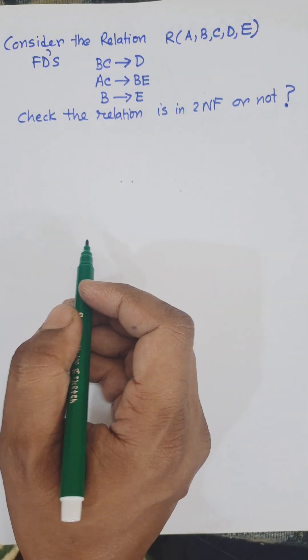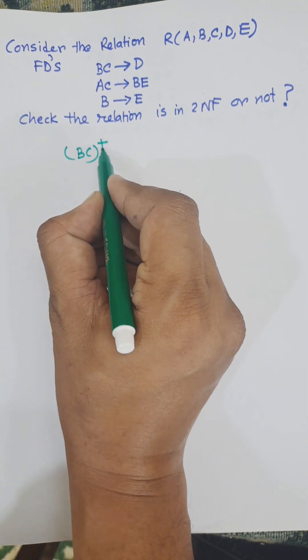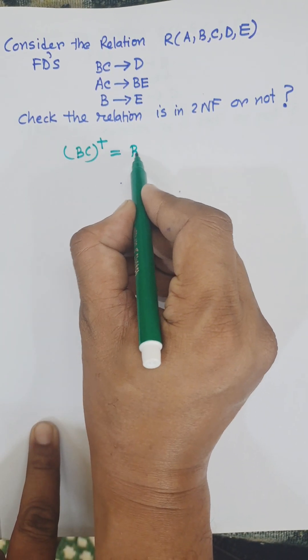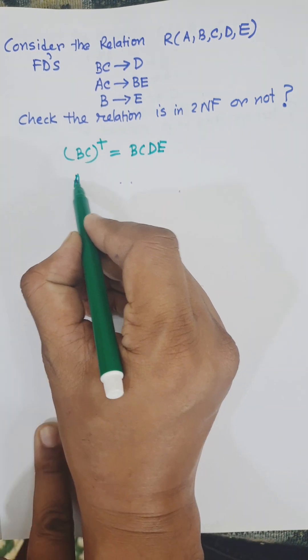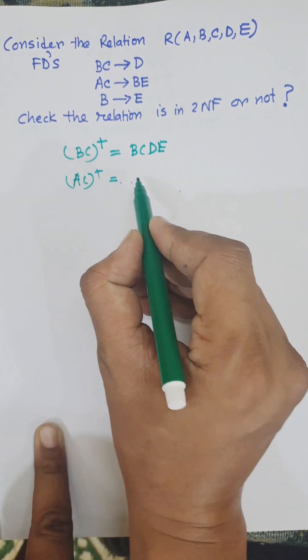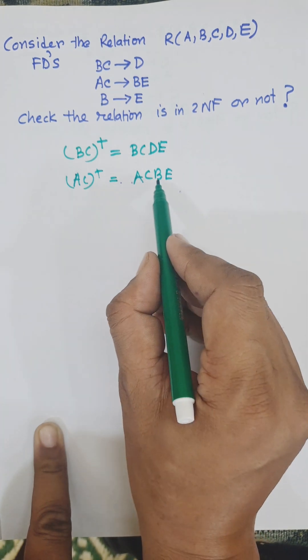First, we need to find the candidate key. Find the closure (BC)+ = BCDE using BC→D and B→E. Then find (AC)+ using AC→BE, then B→E and BC→D, which gives ACBED.